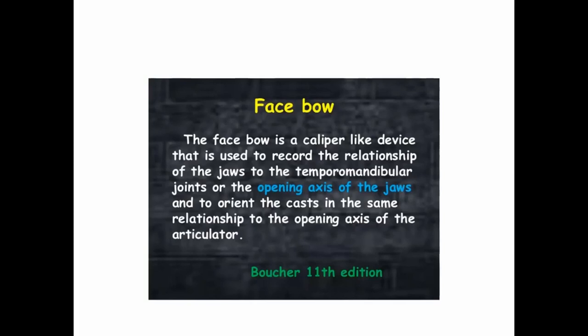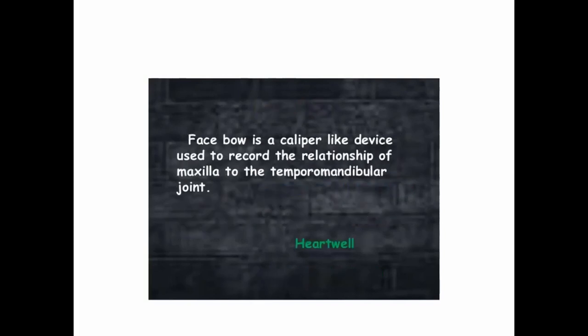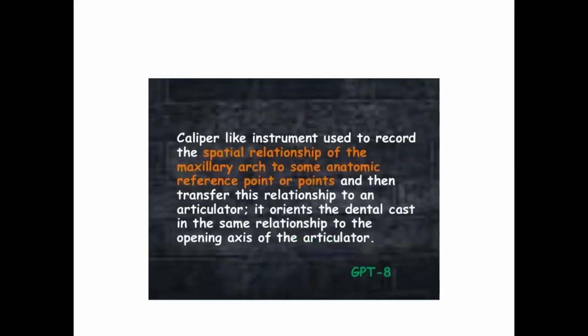This is the definition given by Boucher, and another definition given by Heartbell: the facebow is the caliper-like device used to record the relationship of maxilla to the temporomandibular joint. This is the actual definition given by the GPT-8, the most important definition: facebow is the caliper-like instrument used to record the spatial relationship of the maxillary arch to some anatomic reference points in the cranium and then transfer this relationship to the articulator, to also orient the dental cast in the same relationship to the opening axis of the articulator.